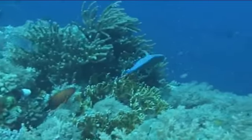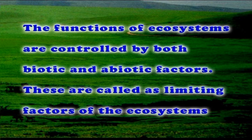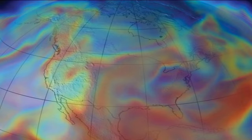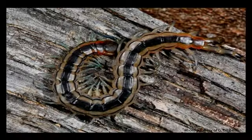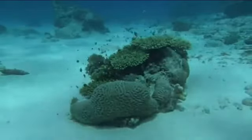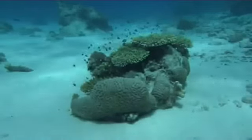Ecosystems are the homes for plants and animal life. Humans have created their own ecosystems. Ecosystems have their own functions and components. The functions of ecosystems are controlled by both biotic and abiotic factors, called the limiting factors of ecosystems. Many limiting factors like climate, topography, and interactions with other organisms play a significant role in controlling the distributions of species.